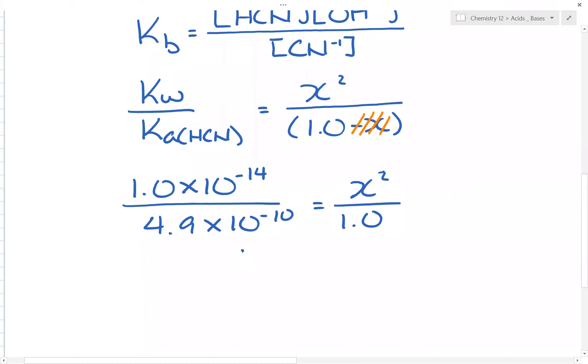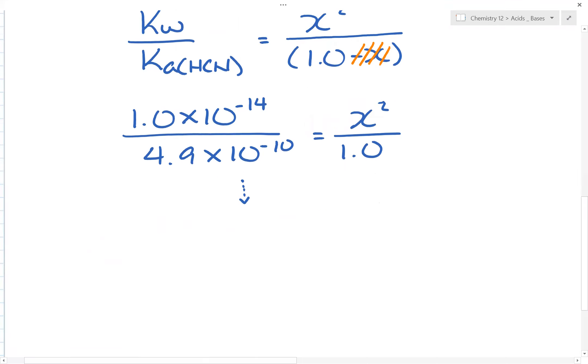And what you can do is solve the math. You go 1 e negative 14 divided by 4.9 e to the negative 10. And then you take the square root of the answer. And the answer is for x, which is the concentration of OH minus 1, is equal to 0.0045 molarity.